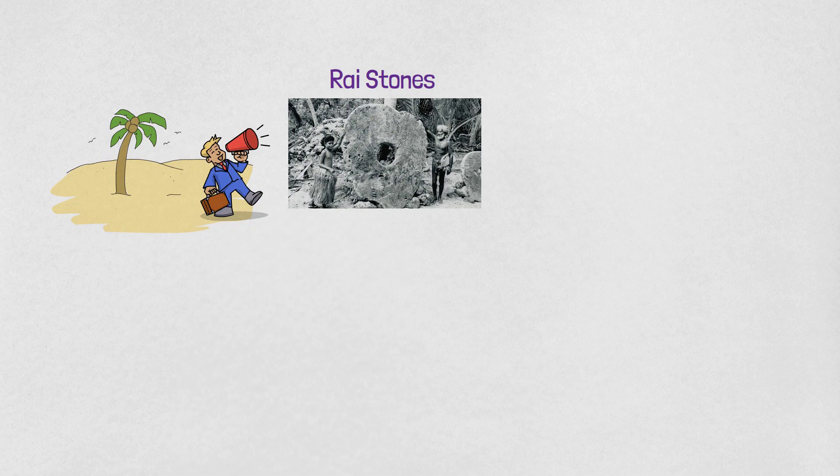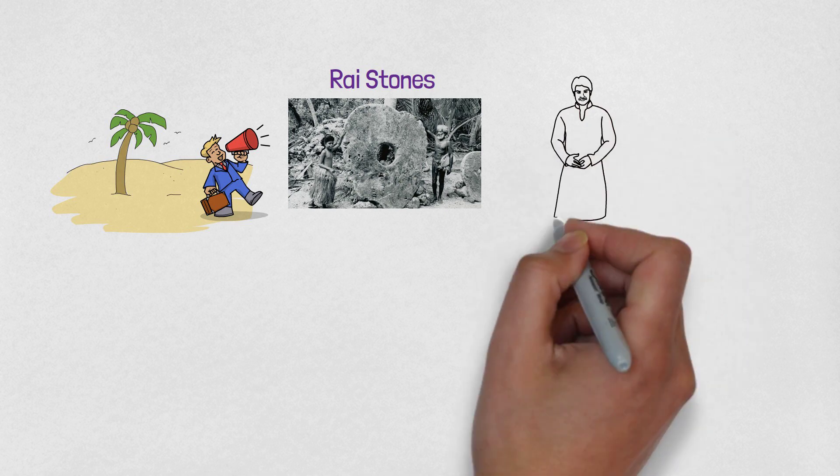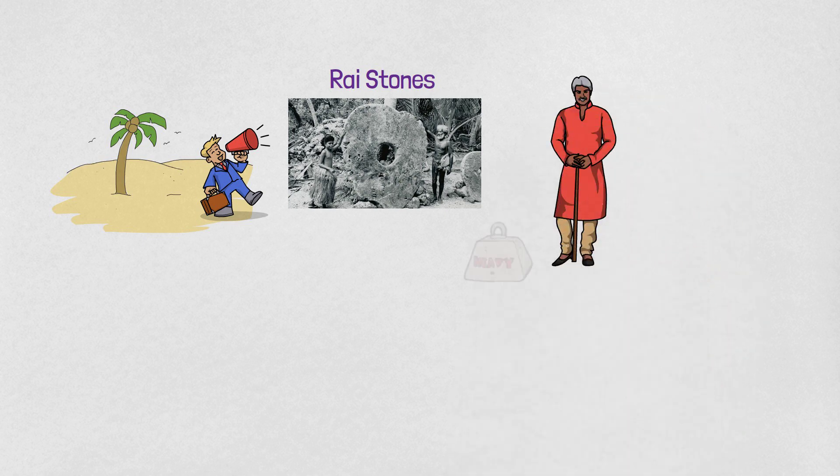There was effectively no way of stealing the stone because its ownership was known by everyone. Although the stones were a solid way to pay for the people who live on the island, they had serious problems for the rest of the world. If a merchant came to buy something, he could not just take the stone as a method of payment because the stone is very heavy and it is not intended as a means of distance payment.